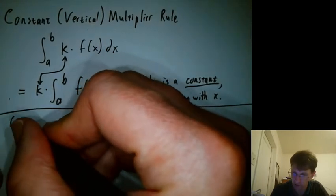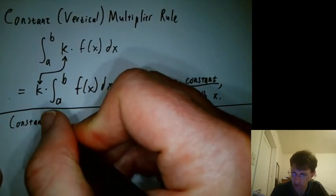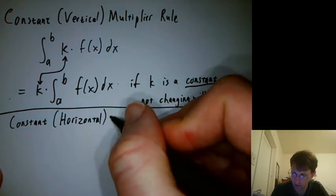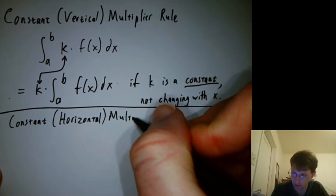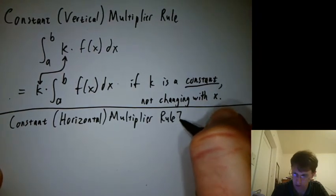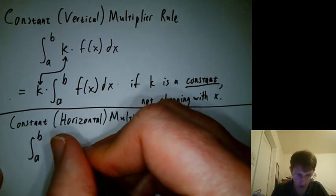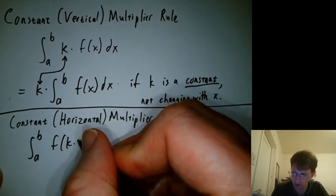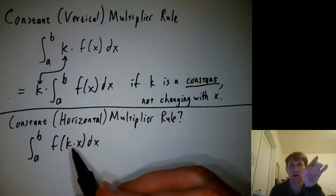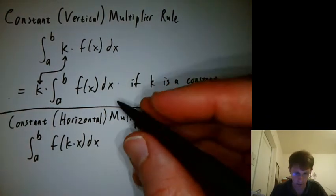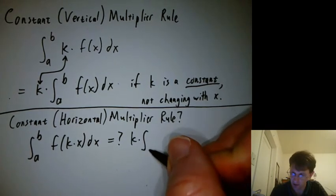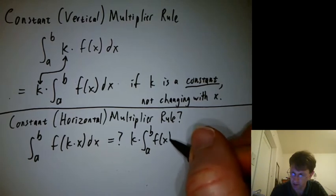The constant horizontal multiplier rule would be the integral a to b f of k times x dx. Well, multiplying by k there is stretching things horizontally or shrinking them. Is that equal to k times the integral a to b f of x dx?